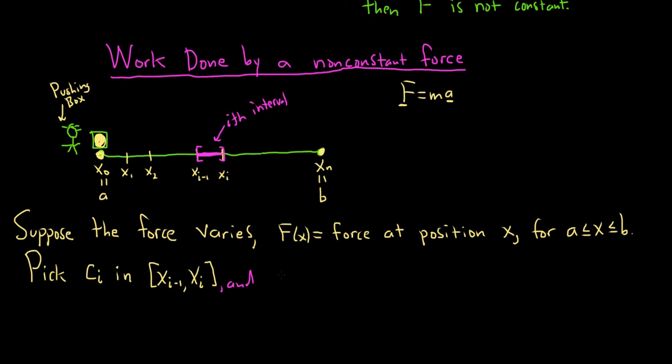And let delta x sub i, we're going to let this be the length of this random i-th subinterval. So we'll subtract the bigger endpoint from the smaller one. That'll give us the length of this little subinterval.